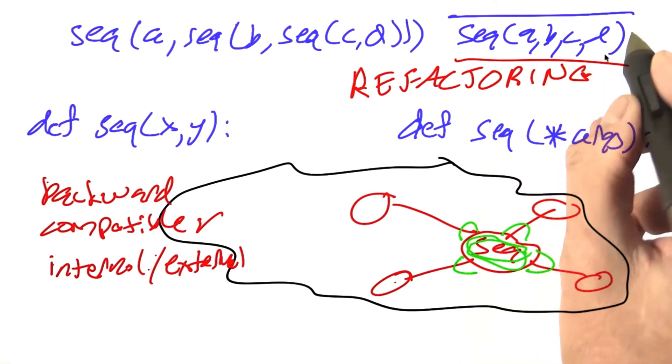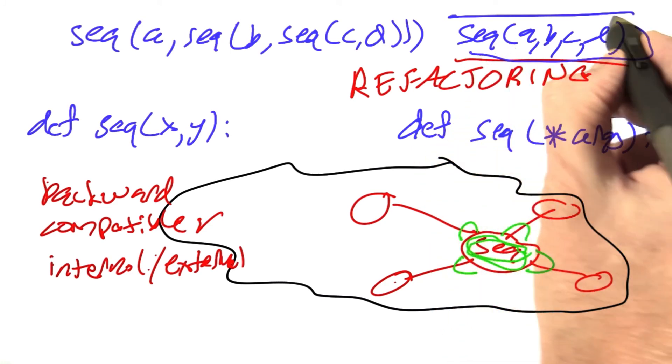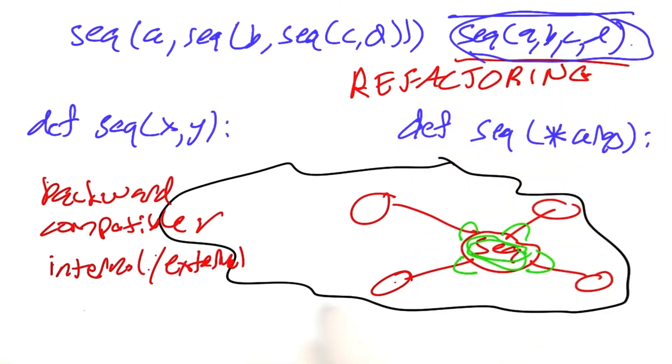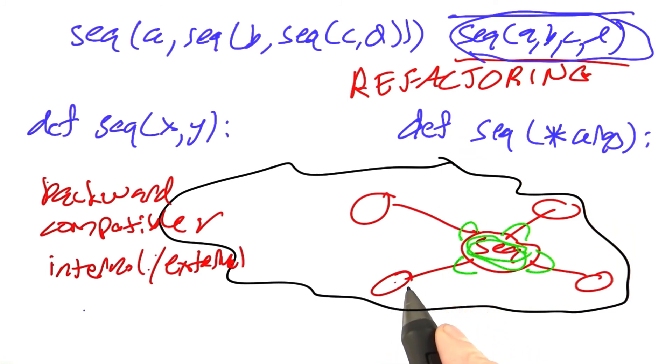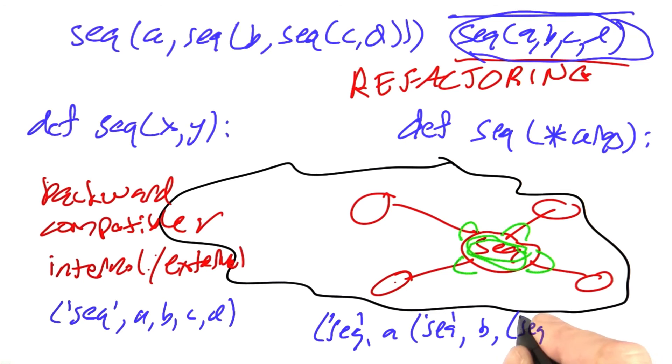Thinking about those two factors, what would be the better way to implement this call? Let's say we're dealing with the match set version where we're returning a tuple. Would it be better to return the tuple sequence ABCD or the tuple sequence of A sequence of B sequence of CD? Tell me, which of these do you prefer from these criteria?